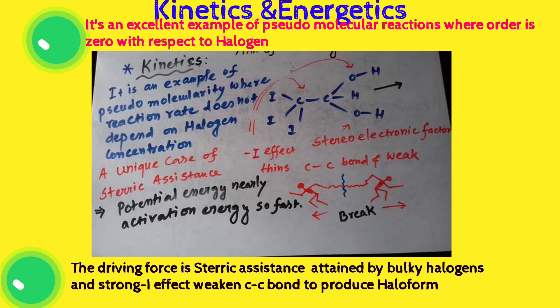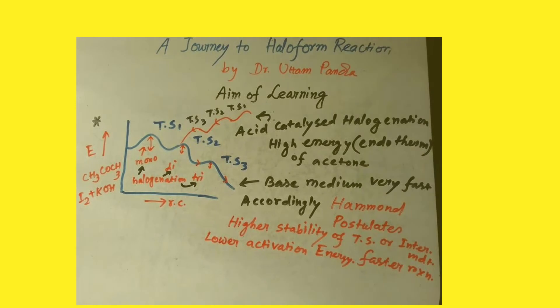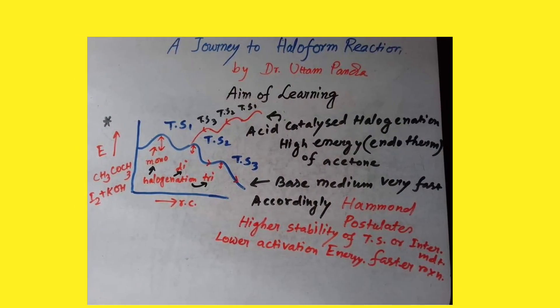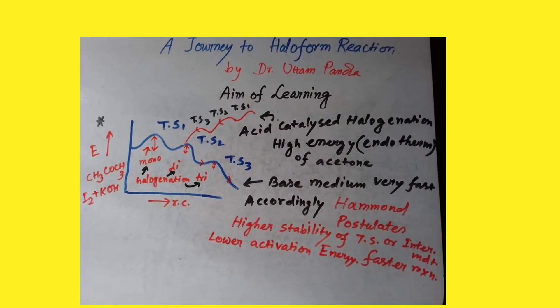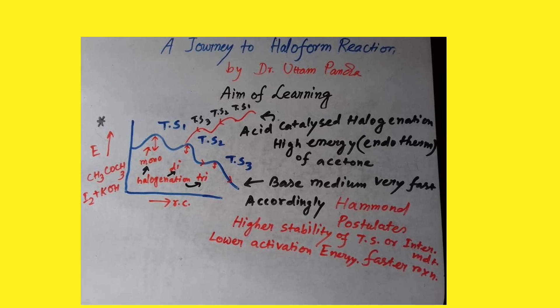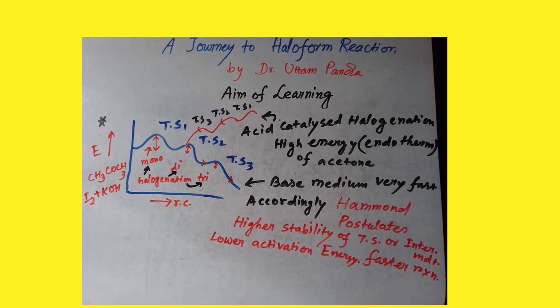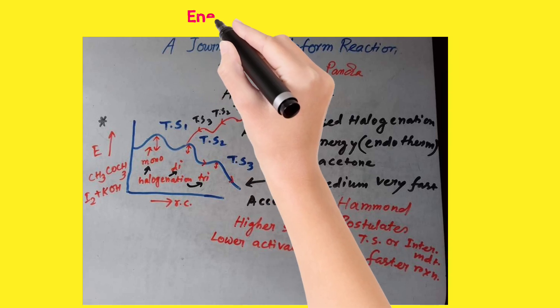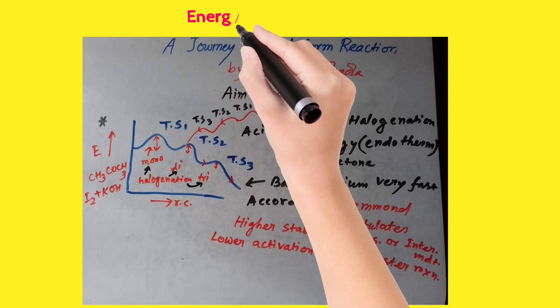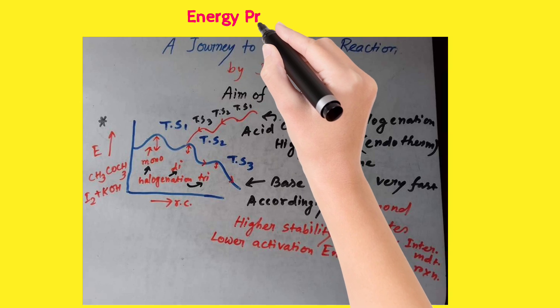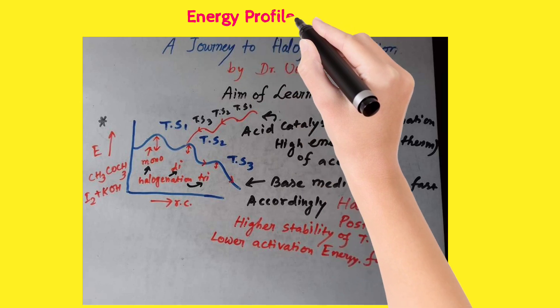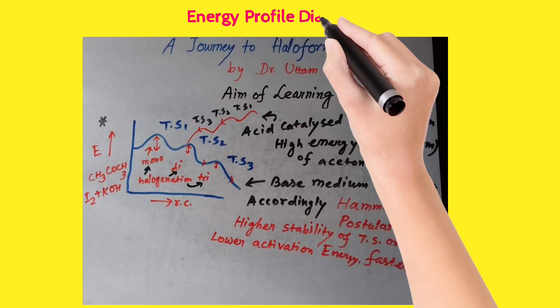The bulky CI₃ group causes the electron density between carbon and carbon to break immediately. The energy profile diagram shows that acid-catalyzed halogenation is quite impossible, but alkali-induced halogenation is very fast and happens step-wise through transition states one, two, and three.